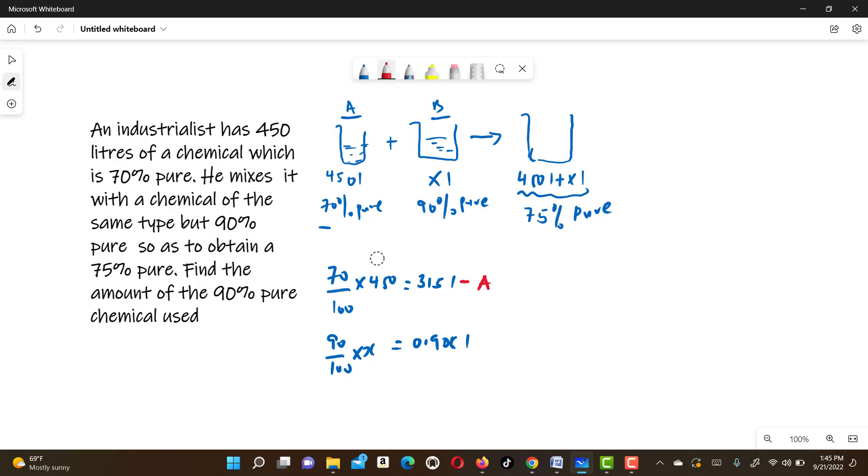What is pure in A is 315 liters. What is pure in B is 0.9X liters. And therefore, in the final mixture, let's call this mixture C, what is pure will be 75% multiplied by the mixture which is 450 plus X.